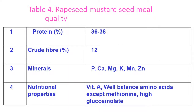Coming to meal quality: protein content in meal should be 36 to 38%, crude fiber 12%, minerals including phosphorus, calcium, magnesium, potassium, manganese, and zinc. Nutritional properties include vitamin A, well-balanced amino acids except methionine, and consideration of glucosinolate levels.